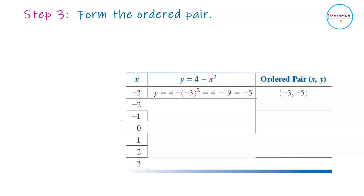So the ordered pair corresponding to this is negative 3, negative 5. That is the y value, and this is the x value that you input to the expression.